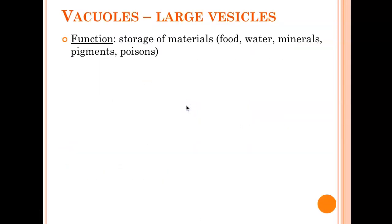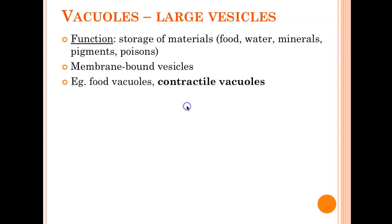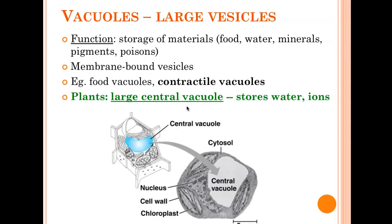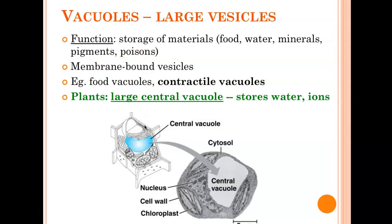Vacuoles — what are they? Large vesicles. What are a few examples in plants and animals? In plants, an example would be the large central vacuole. In animals, examples could be food, water, minerals. Some plants also have vacuoles for pigments and poisons.